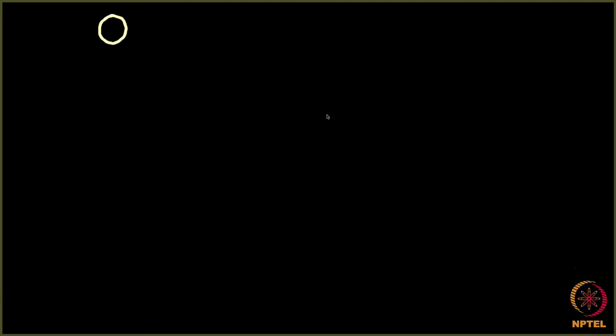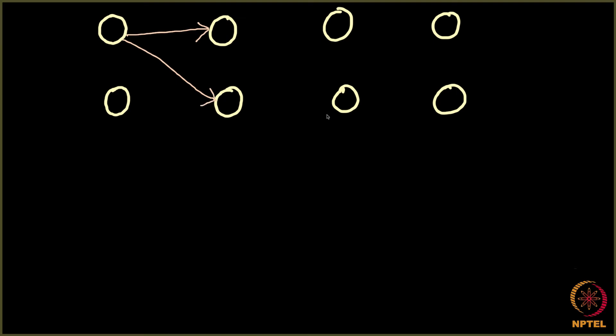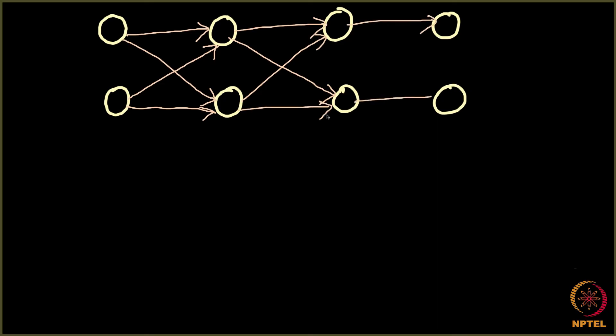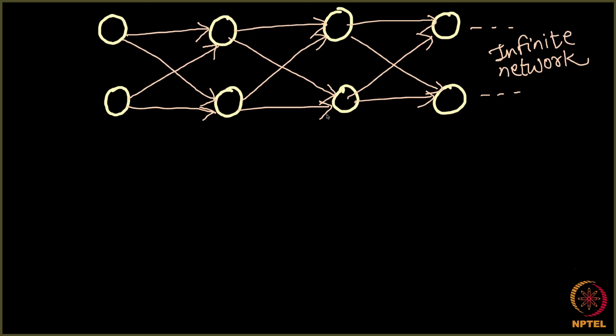Say we have a network in a tree form — this node is connected to two nodes on the next level, that node is connected to both nodes on the next level, and this infinite network goes on like this. Initially, these two nodes are infected, and the probability of infection spreading across each edge is 2/3.